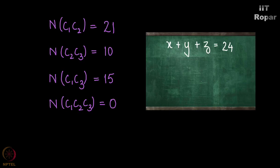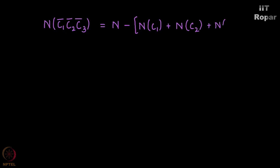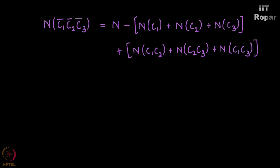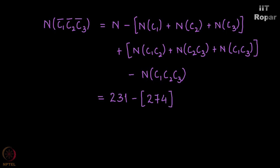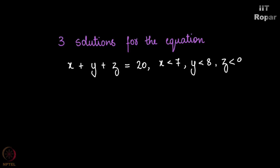Now what is the final answer? n of C1-bar ∩ C2-bar ∩ C3-bar equals n minus (n of C1 plus n of C2 plus n of C3) plus (n of C1∩C2 plus n of C2∩C3 plus n of C1∩C3) minus n of C1∩C2∩C3. We get 231 minus 274 plus 46, and the final answer is 3. So there are 3 solutions for x plus y plus z equals 20 where x is less than 7, y is less than 8, and z is less than 9.